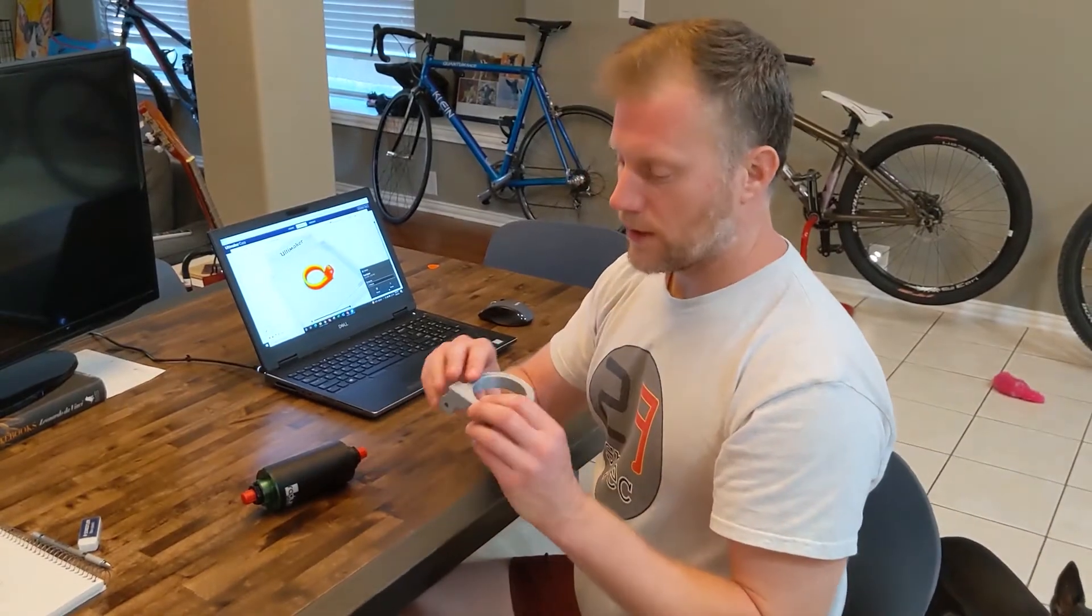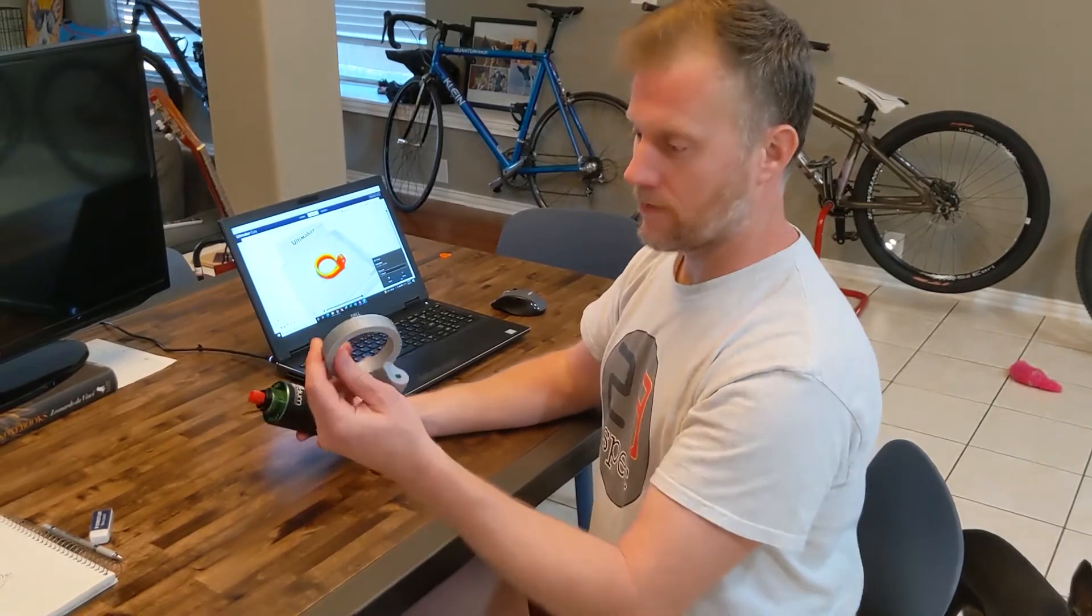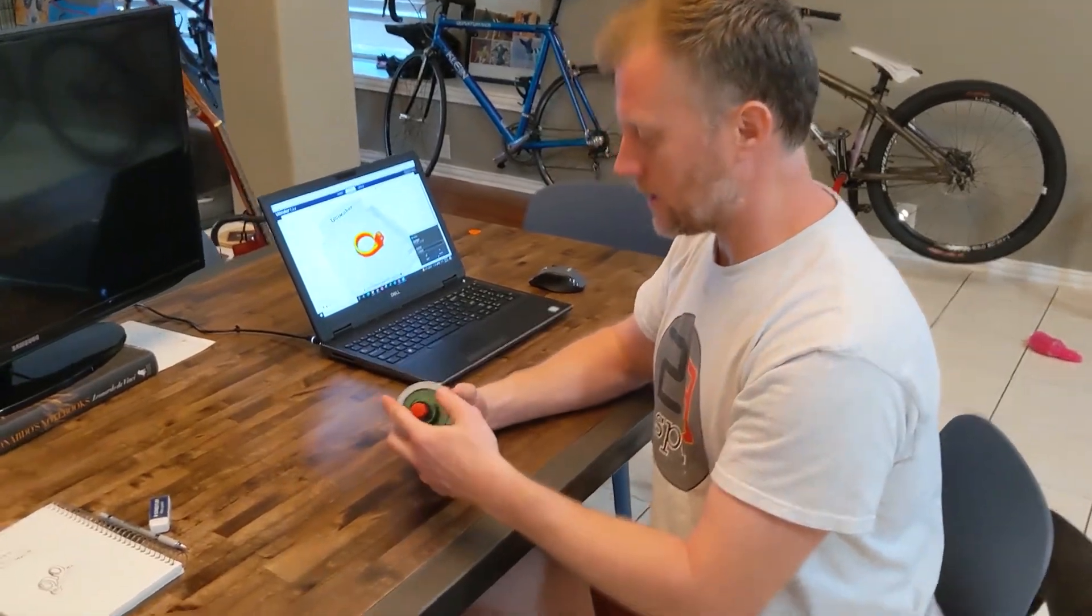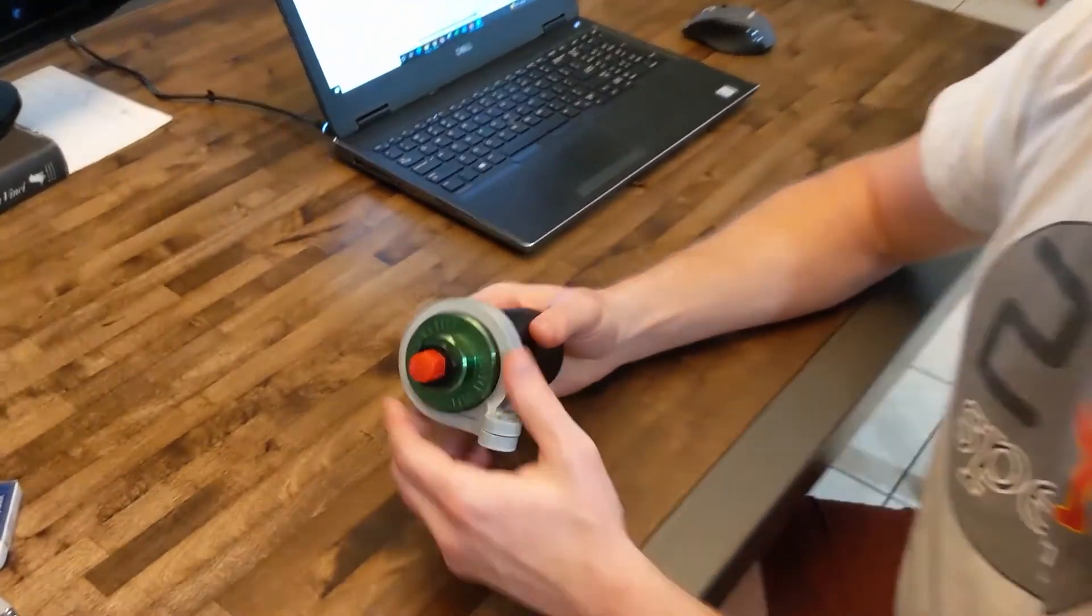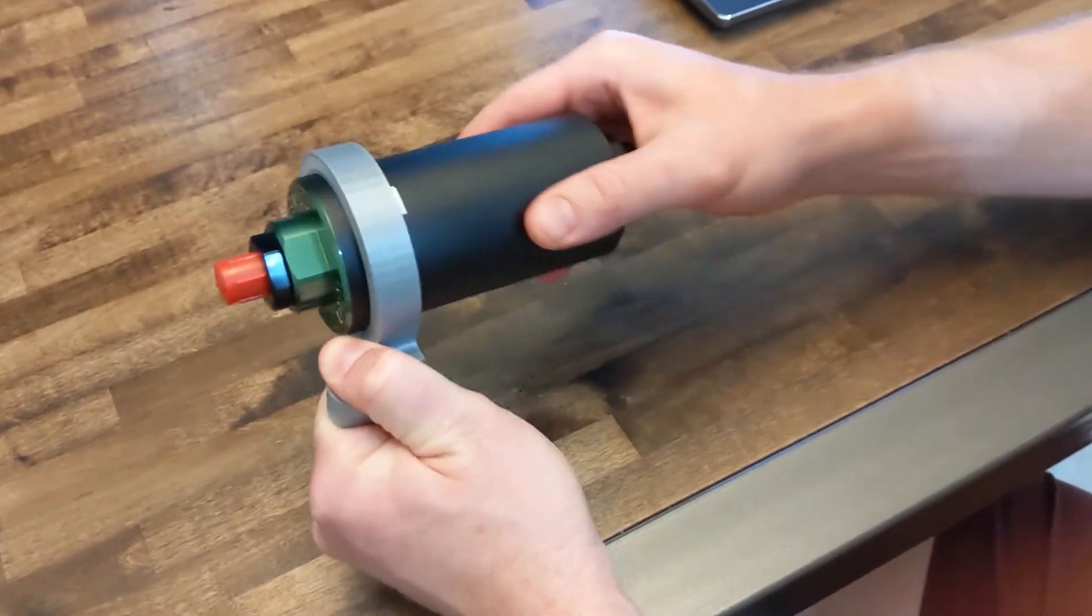Okay, so the first piece is done. I broke the support material off. Check it out, see if it fits. Fits in there nicely, and then the bolt will kind of grab it and it won't go anywhere. So now I'm just going to print the other one and mount it to the car.